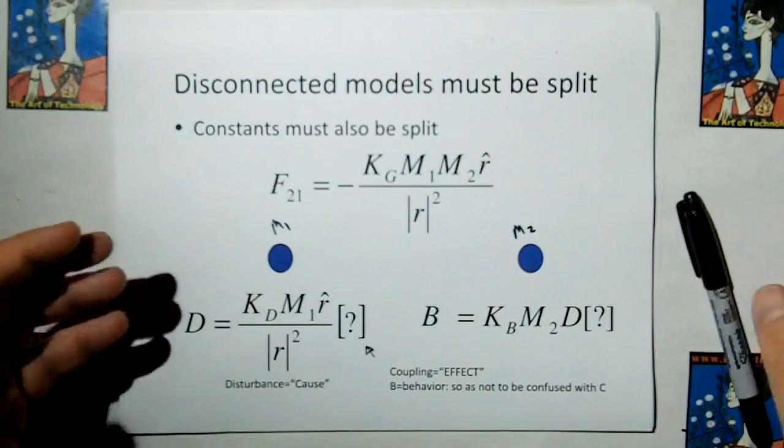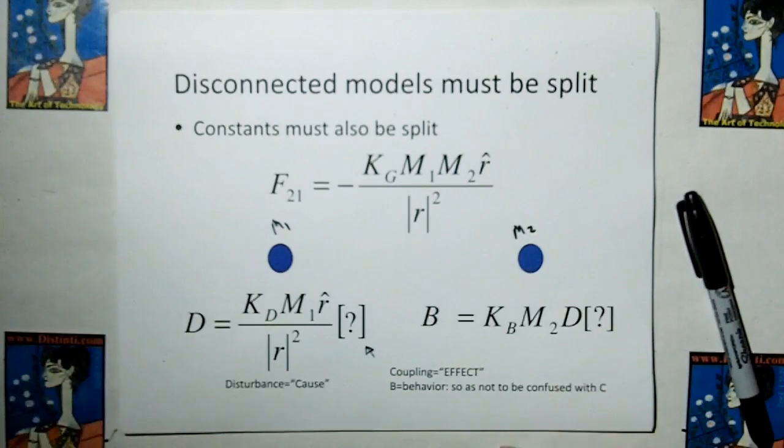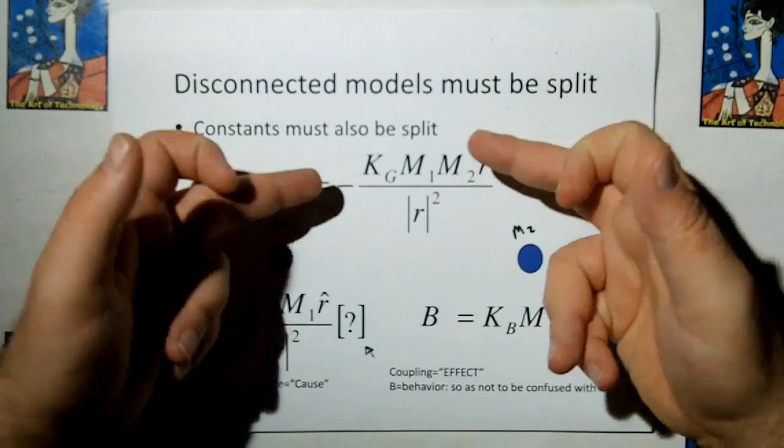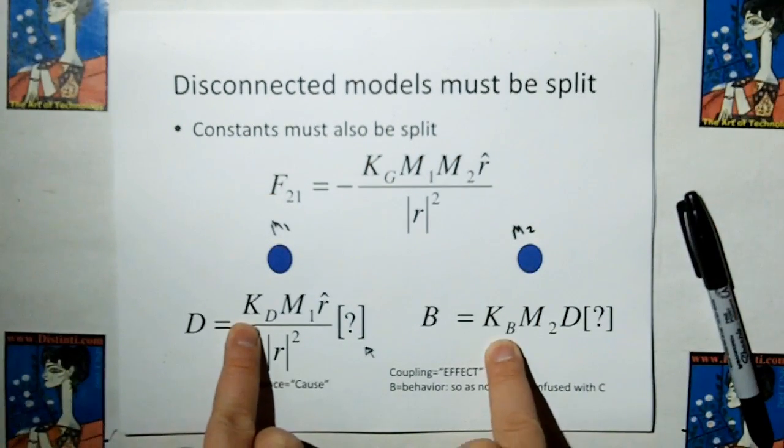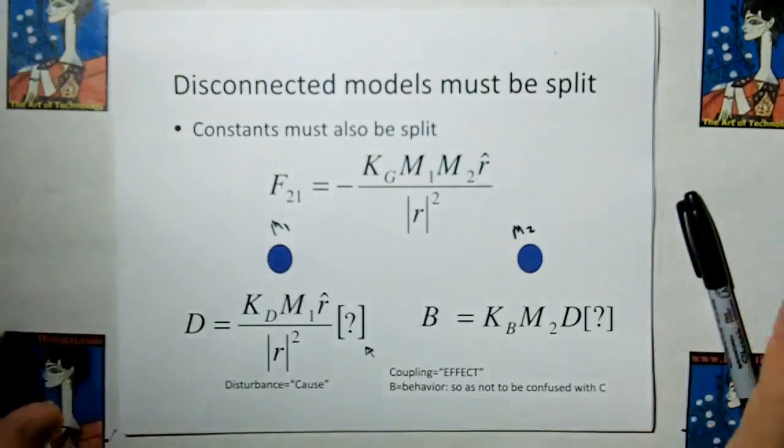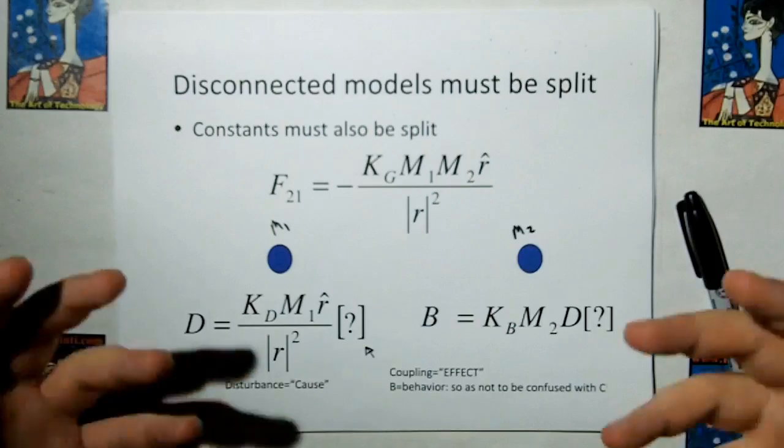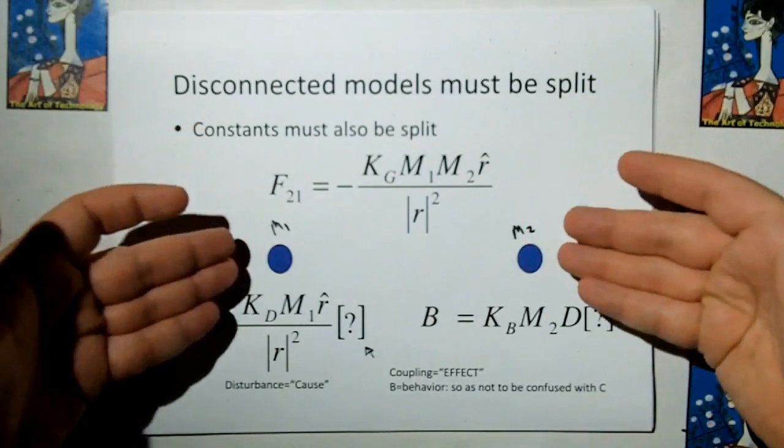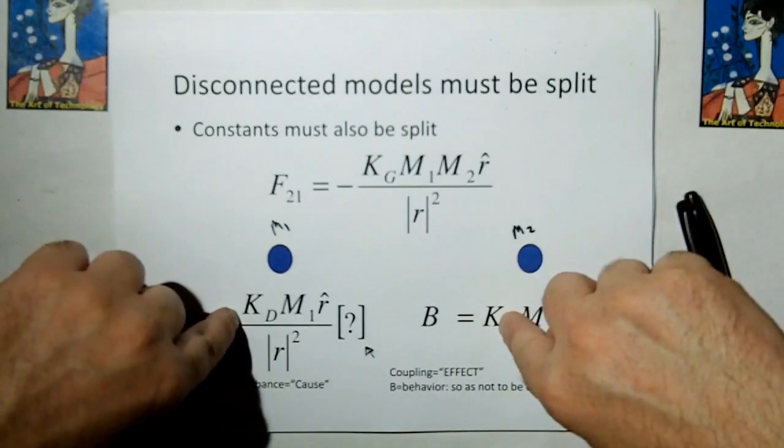In the end, we should be able to take these two models, multiply them together or whatever, and come back up with this. And therefore, KG is going to be a combination of these two constants here, whatever they may be. We're going to do that in a later video. I'm just trying to give you the idea of what a disconnected model means. It means that the disconnected model must be split into cause and effect, and that's going to require a split of the constants as well.